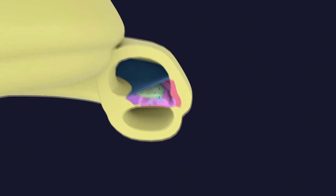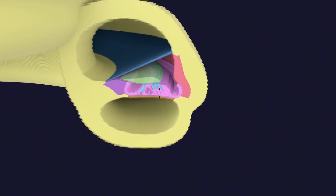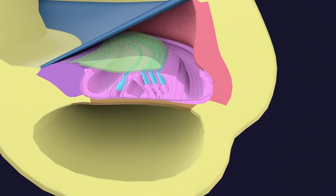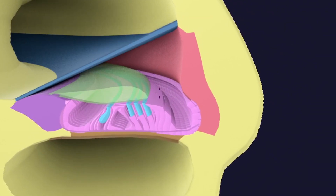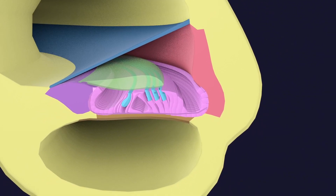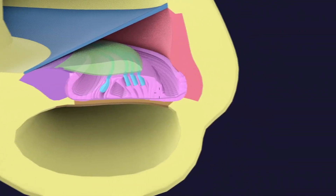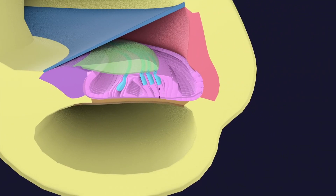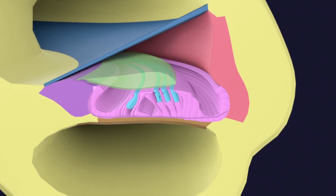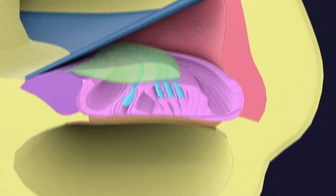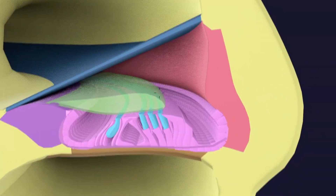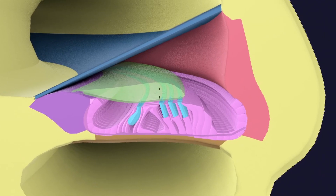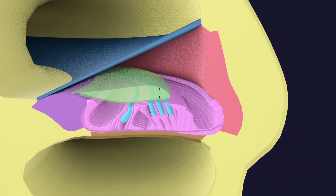Now let's dive into the cochlea. We are going into the cochlear duct or scala media — if we take the walls into consideration it is the cochlear duct, but if we talk about the lumen it is the scala media. Here you can see that supporting cells are lying on top of the basilar membrane, which forms the floor of the cochlear duct. Then we have inner hair cells and outer hair cells, the tectorial membrane, Reissner's membrane forming the roof of the cochlear duct, and the stria vascularis.